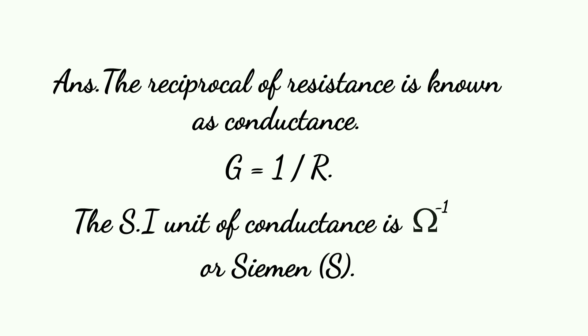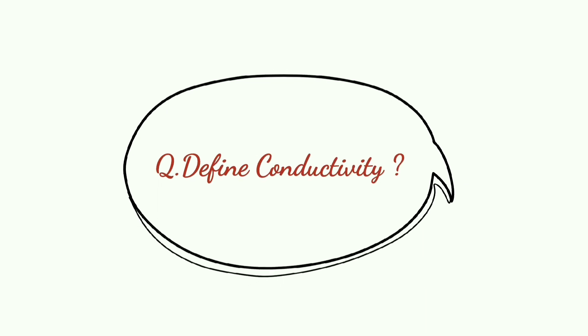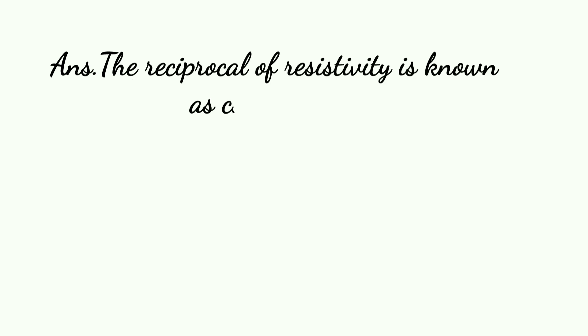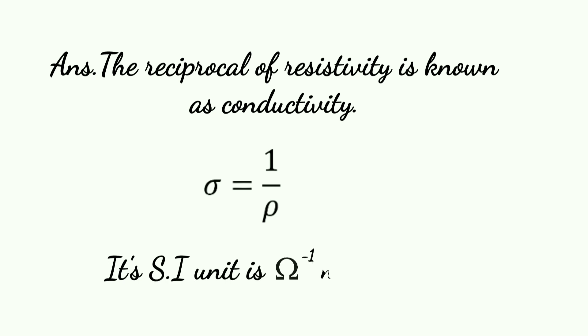The next definition is conductivity. The reciprocal of resistivity is known as conductivity. We use sigma for conductivity, so sigma equals to 1 upon rho, where rho is resistivity. The SI unit is Ohm-inverse meter-inverse.